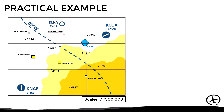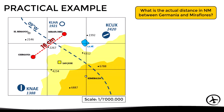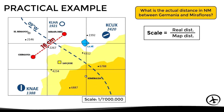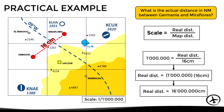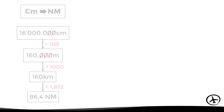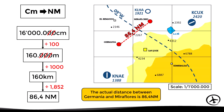For example, with a chart at a scale of 1 in 1,000,000, if we want to determine the distance between the towns of Germania and Miraflores, we use a ruler and measure 16 centimeters on the map. Using the scale formula — real distance equals scale multiplied by map distance — we get 16,000,000 centimeters. Converting to nautical miles gives a real distance of 86.4 nautical miles.